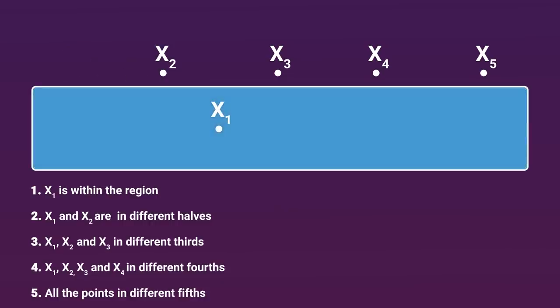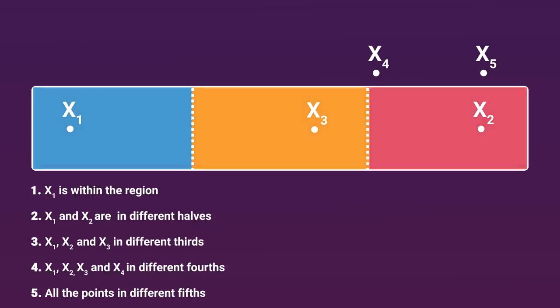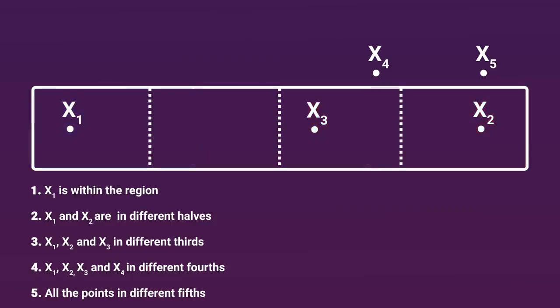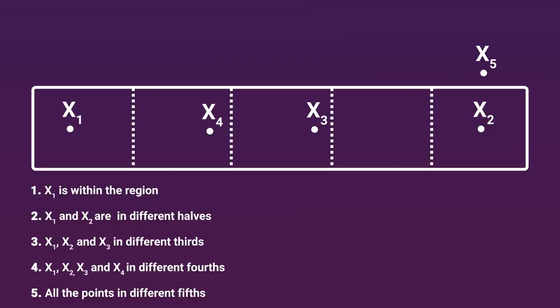If we place x1 here, that just satisfies the first condition, no problem. Now for the second point, let's place it here. Since it's in a different half of the region than x1, we've satisfied condition two. But the third condition says that the first three points must be in different thirds, and these two points are already in the same third. So that failed, but let's just move them aside and put x3 in the middle, because order doesn't matter. Then here's the region split into fourths, and we see there is an open spot for x4 to go, such that condition four is satisfied. Everything's in their own separate fourth. But now we've got to split it into fifths, and hope that x1 through x4 are in different fifths, while allowing room for x5. And yes, in fact, that does work out. x5 just goes here, and we're good.